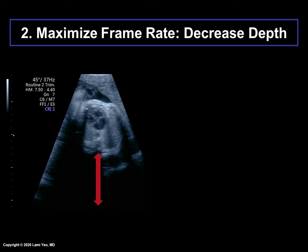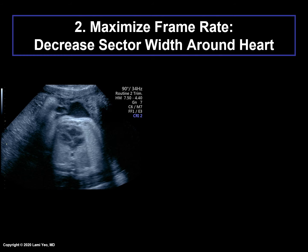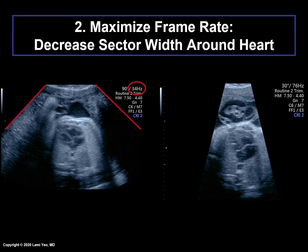Just by decreasing the depth, the frame rate has increased from 37 to 51 hertz, and there is also improved temporal resolution. When the sector width is narrowed, the number of pulses required to make the image decreases, and there is increased temporal resolution and a higher frame rate. With a wide sector width, the frame rate is 34 hertz, but increases to 76 hertz when the sector width is decreased.